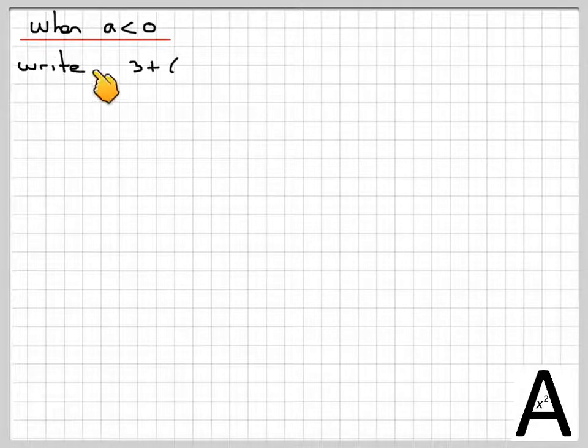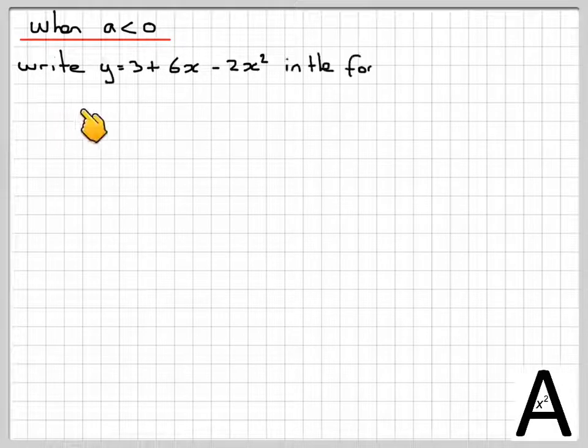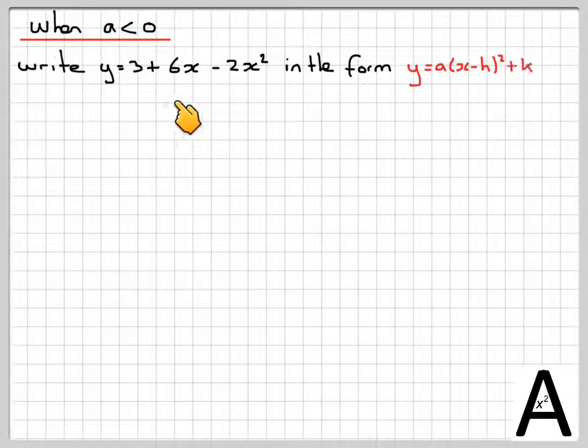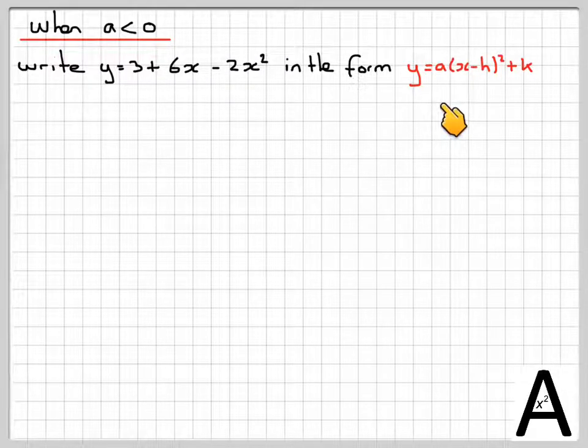Now the question arises, what do we do when a is negative? For example, write y equals 3 plus 6x minus 2x squared in the form y equals a brackets x minus h all squared plus k.